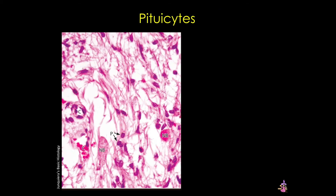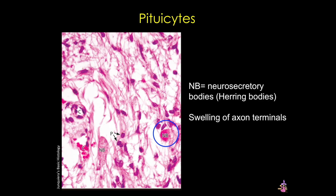Here's a more magnified view of the pars nervosa tissue, where you can see the nuclei of pituitocytes. Circled in blue is a herring body, or neurosecretory body — these are swellings of the axon terminals that store ADH and oxytocin.